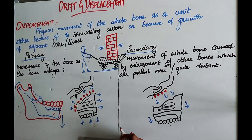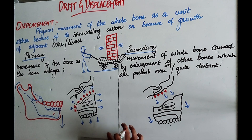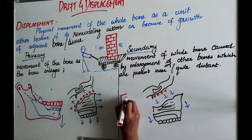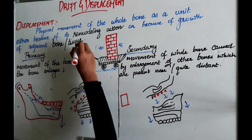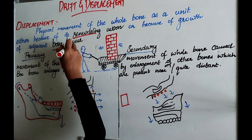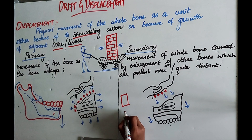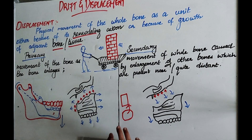Coming to displacement in orthodontics. Displacement is a physical movement of the whole bone as a unit, either because of its own remodeling action or because of growth of an adjacent bone or tissue. The whole bone will be moving either due to remodeling or due to the growth of an adjacent bone or tissue — that is displacement.